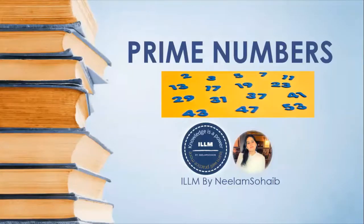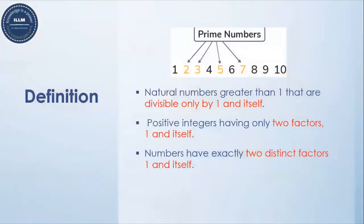Hi everyone, today we will discuss prime numbers. What are prime numbers? These are natural numbers which are greater than one and they are divisible only by one and itself. These positive integers have only two factors: one and itself. Let's have a look at this list of numbers.